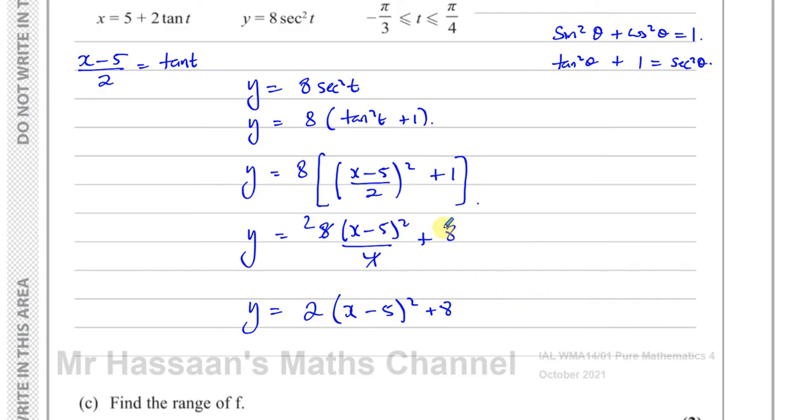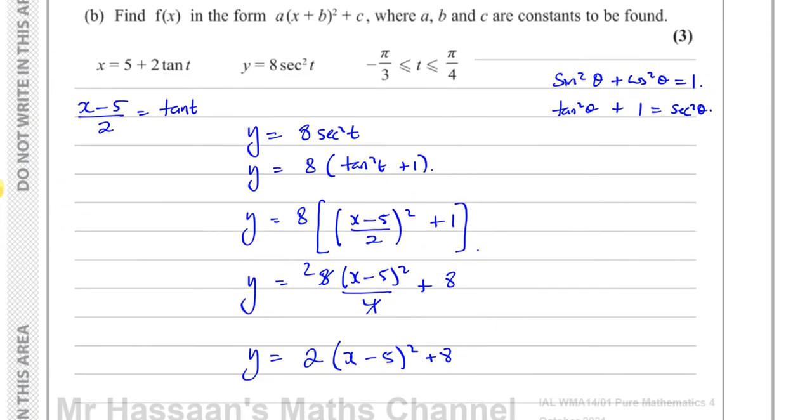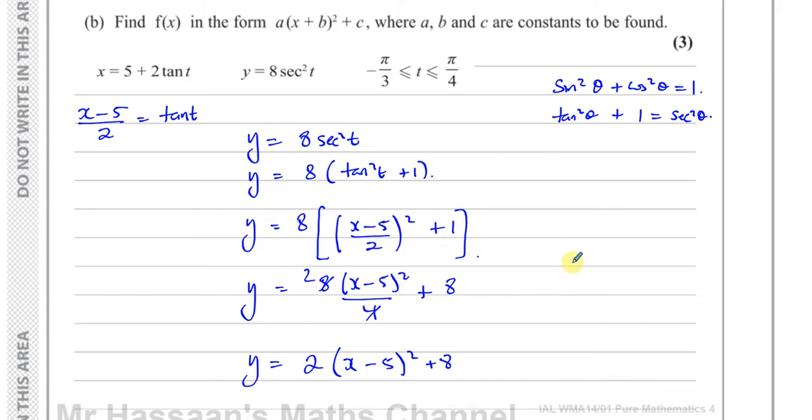So we can see now that it's in the form required, which was in this form here. So we can say a is equal to 2, b is equal to minus 5, and c is equal to 8. You don't actually have to write that down because it's asking if you put it in this form, which we have done. And there's the answer to part B.